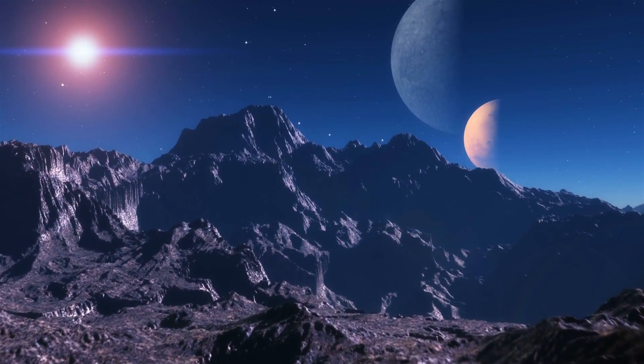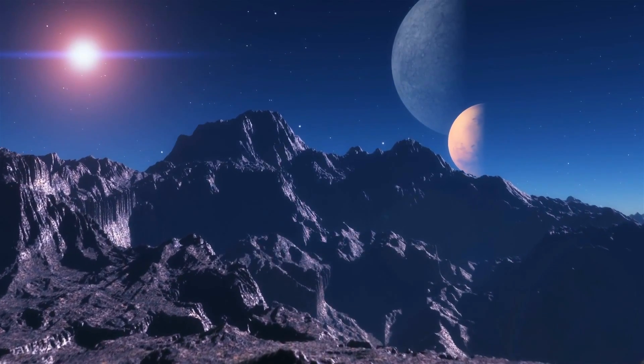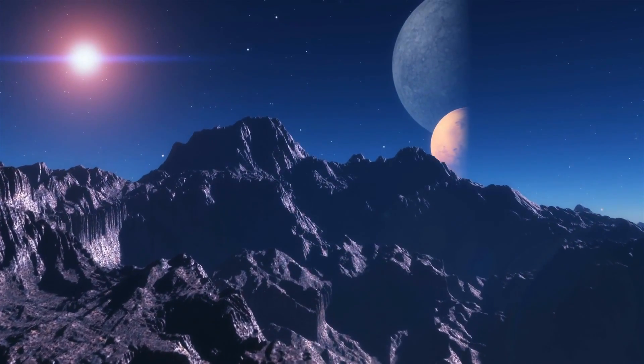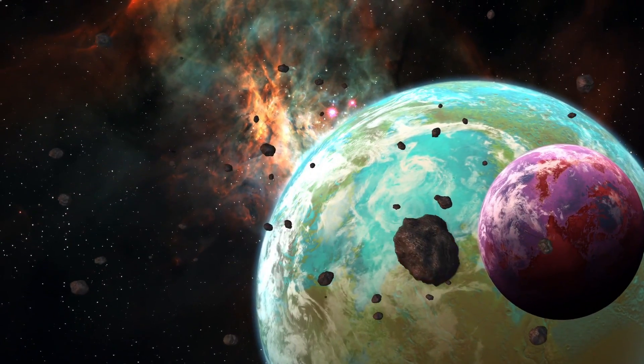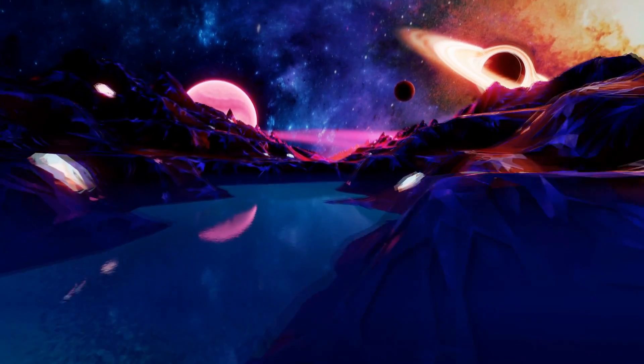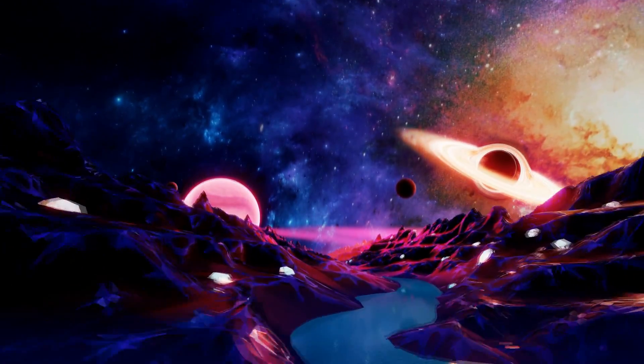Some of these planets may be terrestrial, but lack the liquid or frozen water necessary for life as we know it. Yet, there are likely to be many Earth-like planets in the habitable zones of their suns that harbor water.